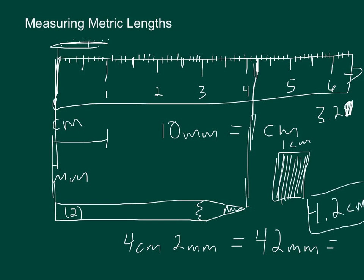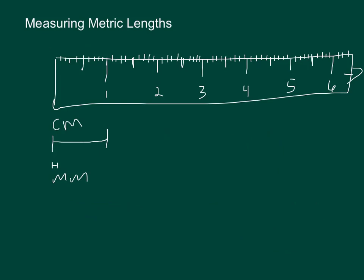The point 2 represents 2 tenths of a centimeter. Each millimeter is the same thing as 1 tenth of a centimeter. So if I said that I had 42 millimeters, that's the same thing as saying 42 tenths of a centimeter, or 4 and 2 tenths of a centimeter, because each millimeter is 1 tenth.